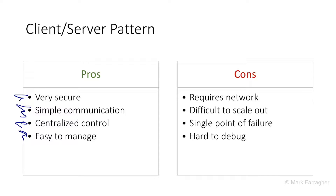But there are cons as well. It requires a network, so if the network is slow or drops out completely, this whole pattern breaks down. The client-server pattern is difficult to scale out because there's one server — you can scale up by making the server bigger, but it's very hard to go from one server to two. The server represents a single point of failure. And it's hard to debug because of the network connecting the client and server, making bugs difficult to reproduce.